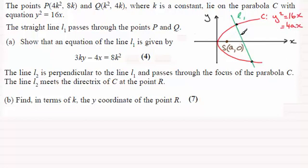So we've got a line going through here which is perpendicular to L1 and it's called L2. I'll just mark that on as being L2, and we're being asked to find out the coordinates of the y-coordinate, that is, of the point where this line L2 crosses the directrix.